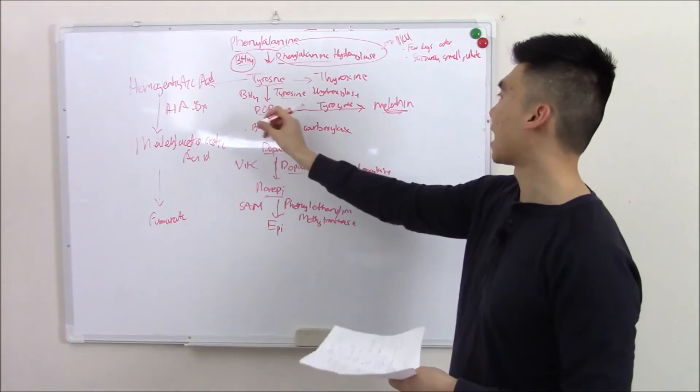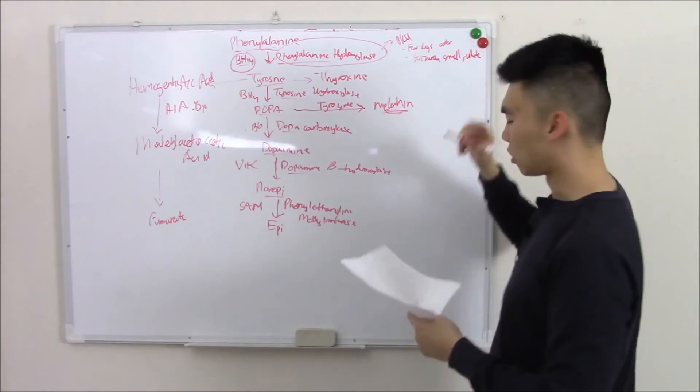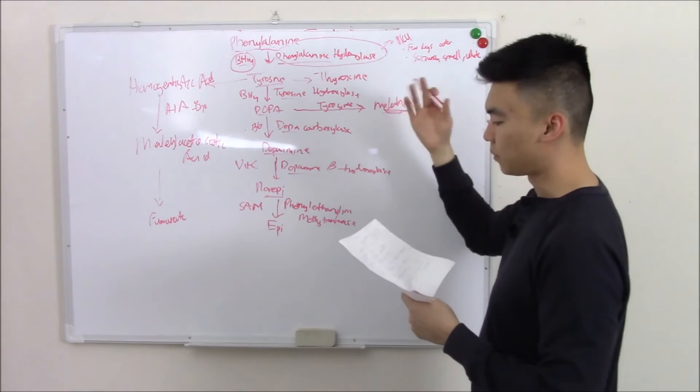If they can't go down this pathway, then they can't make melanin. Correct? So all those together is PKU.